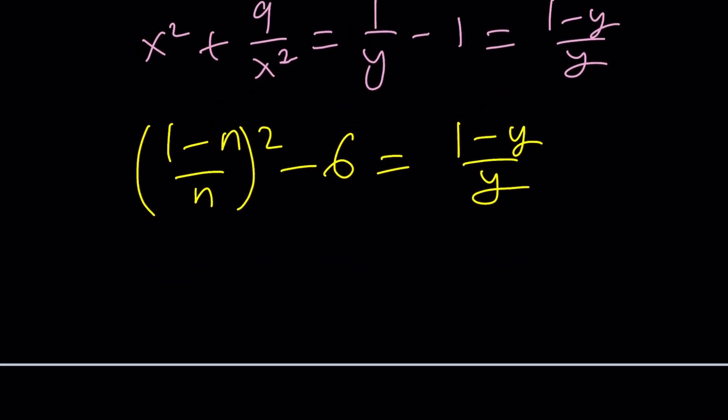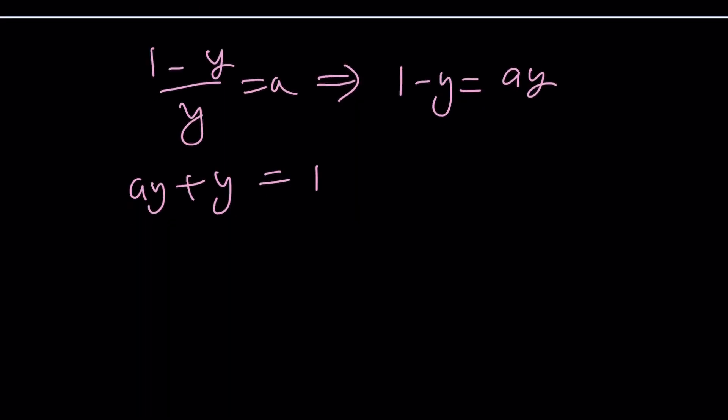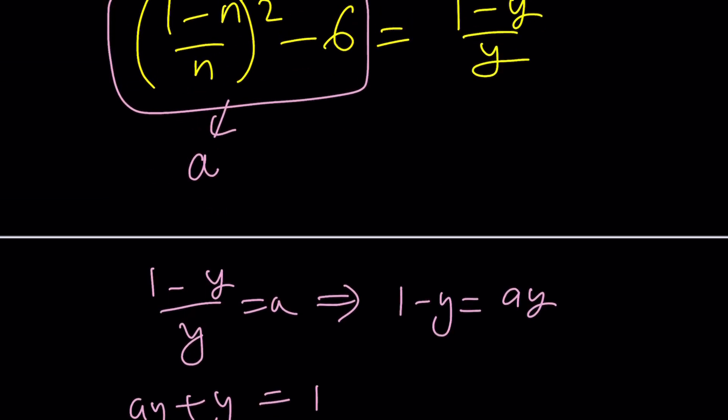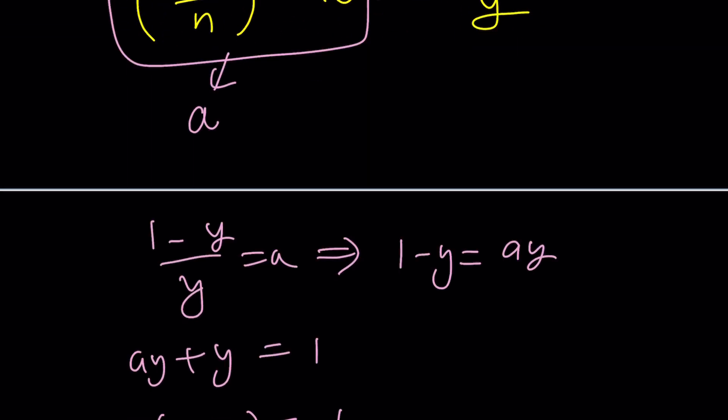Here's a slightly easier way to do it. Let's call this a, a lot of substitution. And we have 1 minus y over y equals a. And then 1 minus y equals ay. ay plus y equals 1. y times a plus 1 equals 1 and y is equal to 1 over a plus 1. Remember we're looking for y. And the answer is 1 over a plus 1 so 1 over what's a? That expression.